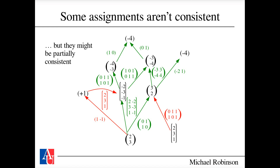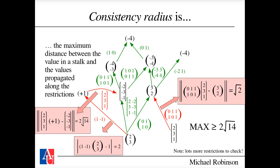We can measure inconsistency because in these vector spaces we have a way to measure distance. Walking around the diagram and checking how far values are from what would be expected: for example, (2,3) maps to minus one, but the value placed there is plus one — a distance of two. Another restriction is off by √2. The maximum discrepancy across the entire diagram is called the consistency radius; from the checked restrictions we know it is at least as large as 2√14.